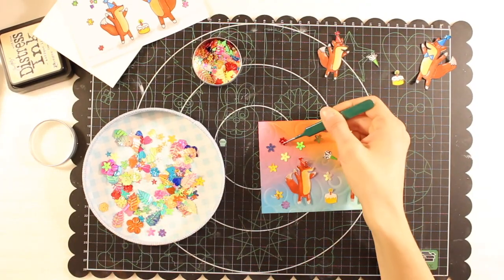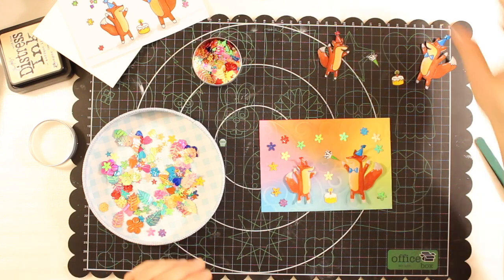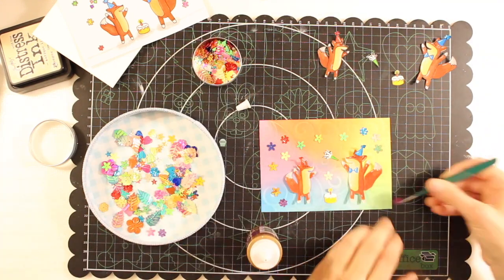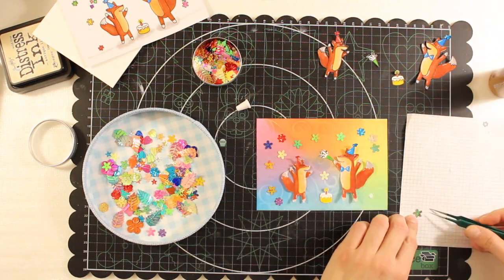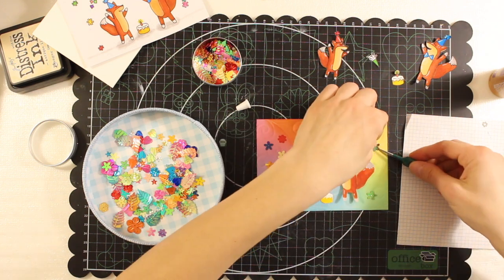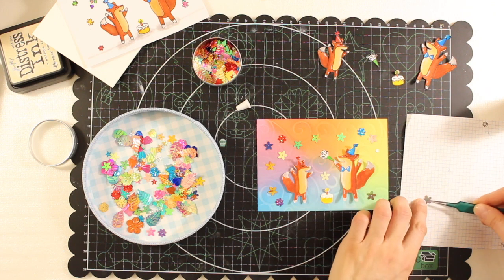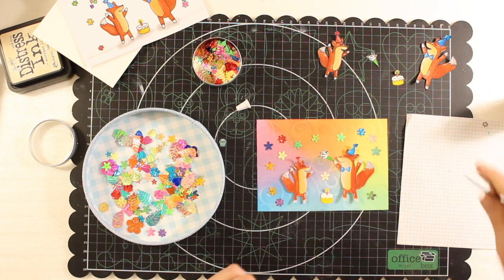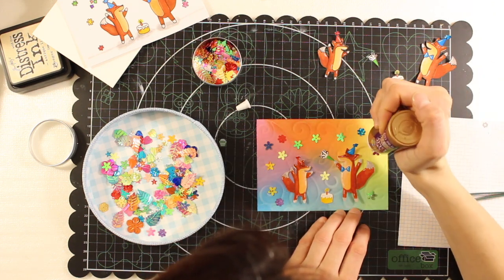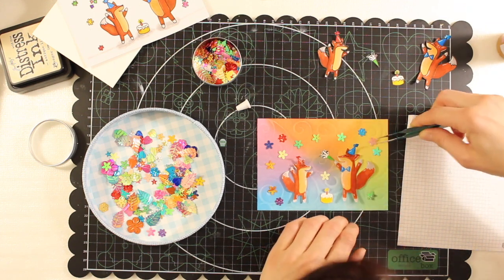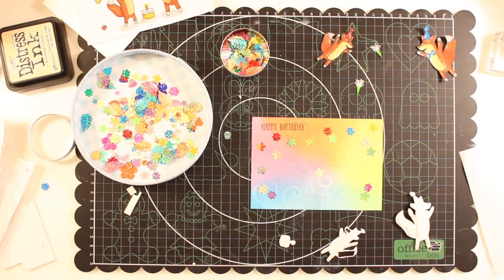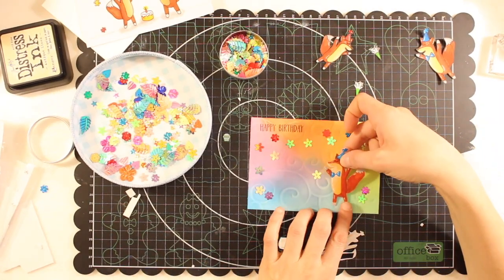Now for the card with the no-line stamped images, I decided to use colorful sequins to embellish and I'm gluing them directly on the background. A few of them spread around. And then I will glue down the foxes again with adhesive foam.